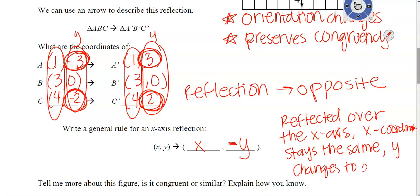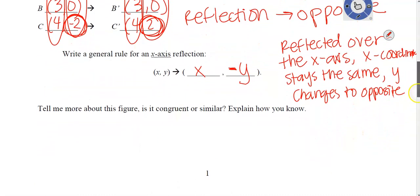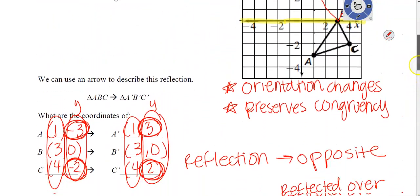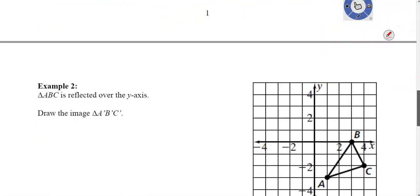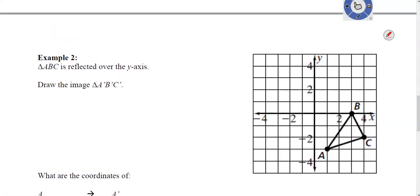It's easy to remember: reflects over the x-axis — x stays the same, y changes to the opposite. To answer the question about the figure: is it congruent or similar? It is congruent — it stays the same size.